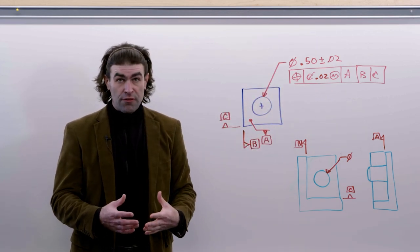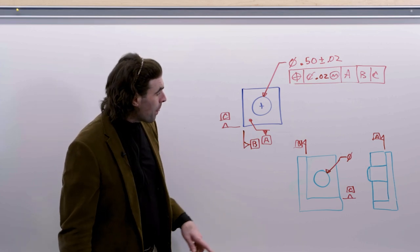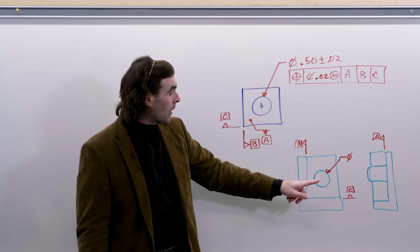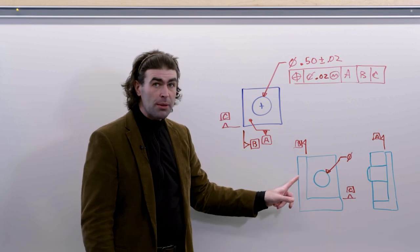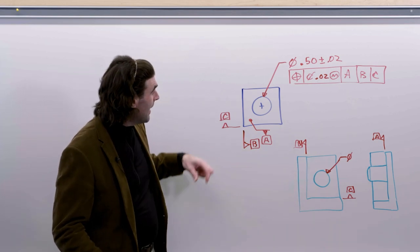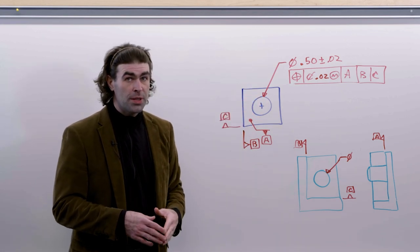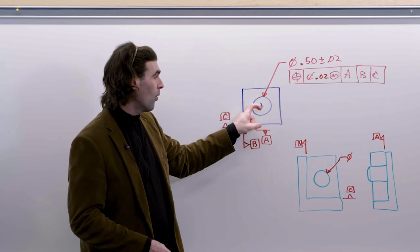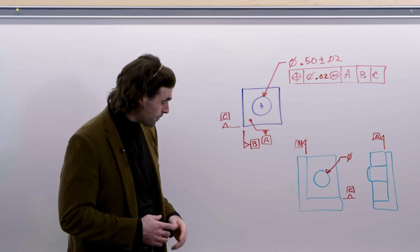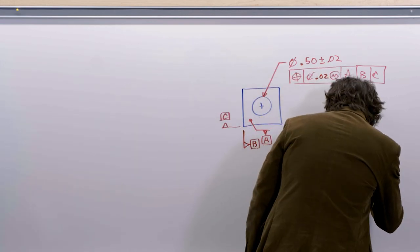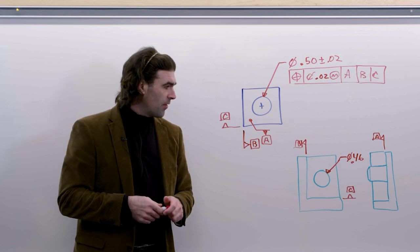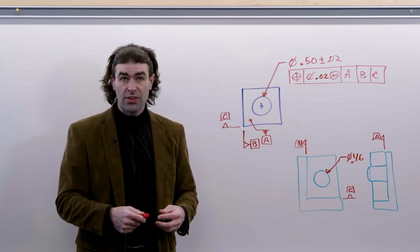If we wanted to verify this with a gauge, it would be something like this. We've got a pin and then three planes to simulate the datums, omitted basic dimensions, but the pin would be the same basic dimension as the hole is from the sides of the part.